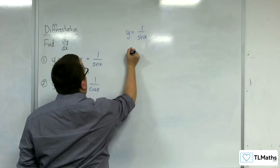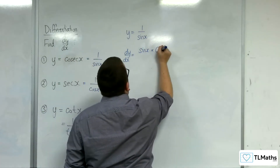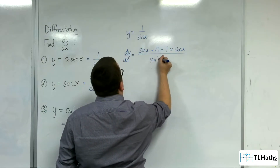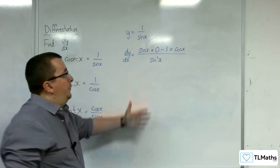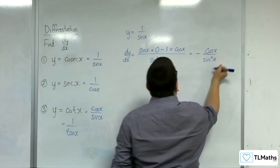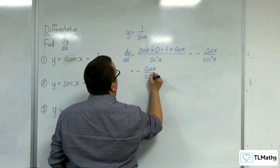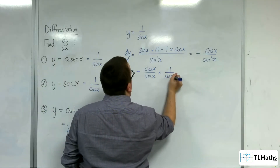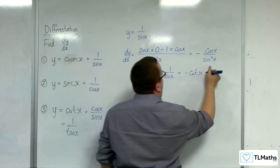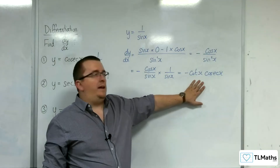So, if I was going to use the quotient rule, then dy/dx is the bottom times by the derivative of the top, which is 0. Take away the top times the derivative of the bottom, which is cosine x, over the bottom squared — so, sine squared x. Sine x times 0 is 0, so we're left with minus cosine x over sine squared x, which you can simplify down to minus cosine over sine times 1 over sine. And that is, of course, minus cot times cosec.